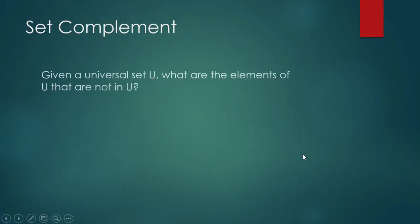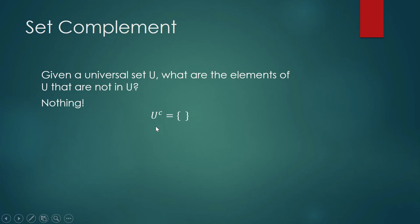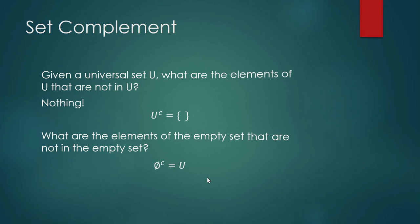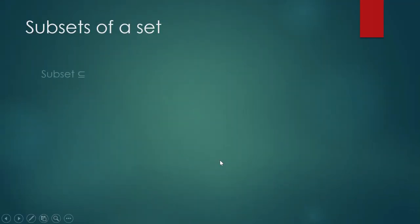More on set complement: given the universal set U, what elements of U are not in U? Nothing — so the complement of the universal set is the empty set. Conversely, all elements in the universal set are not in the empty set, so the complement of the empty set is the universal set.